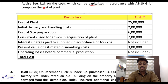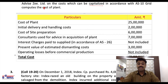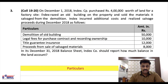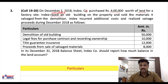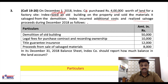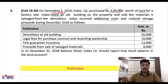If you are clear with yesterday's theory, then only you will be able to follow these things. Look at Question Number 3. On December 1, 2018, Index Company purchased rupees 4 lakhs worth of land for a factory site. Index Company then razed — meaning demolished — an old building on the property, destroyed it, and sold the materials salvaged from the demolition.